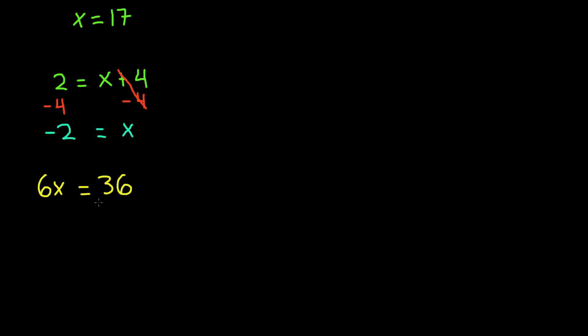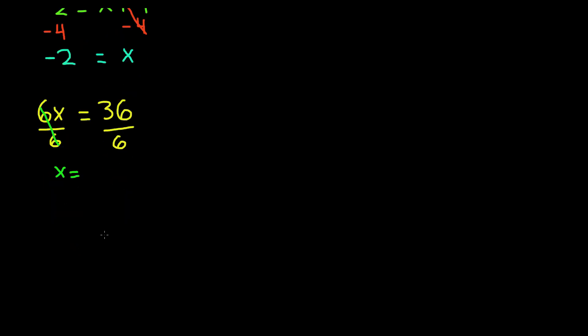If we divide both sides by 6, we know that the 6 cancel each other out. So we are left with x is equal to 36 divided by 6, which is 6. And our answer is 6. And if you want to check our answer, we know that 6 times 6 is 36. Therefore, our answer is correct.